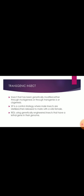Here we are going to discuss about transgenic fish, transgenic chicken, rabbit, sheep, goat, pig, cow, and primates. First of all, let's discuss about transgenic insects. A transgenic insect is an insect that has been genetically modified either through mutagenesis or through the process of transgenesis or cisgenesis.